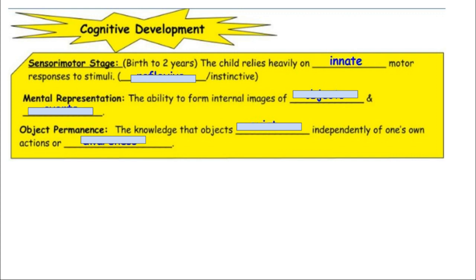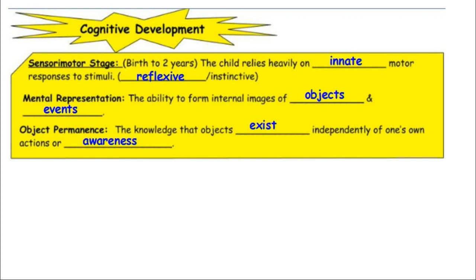The sensorimotor stage is from birth to age two. The child relies heavily on innate motor responses to stimuli — it's reflexive and instinctive. Mental representations, the ability to form internal images of objects and events, start occurring here. A big feature is object permanence — the knowledge that objects exist independently of one's own actions and awareness. A great way to test this is peekaboo. Typically, infants get anxious when their caregiver seems to leave, but by about 18 months they figure out how the game works and may cover their own head with a blanket, thinking they've disappeared.